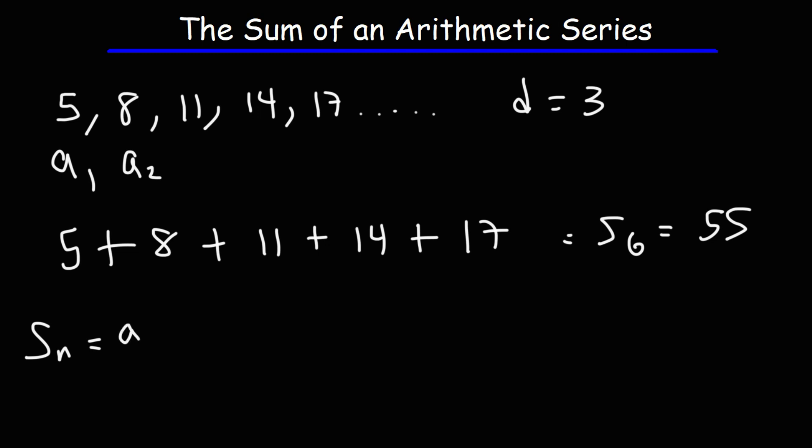Now we could also calculate that sum using this formula. It's the sum of the first and the last terms divided by 2 times n. So basically this part here means that it's the average of the first and the last term.